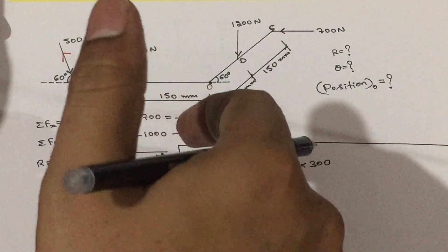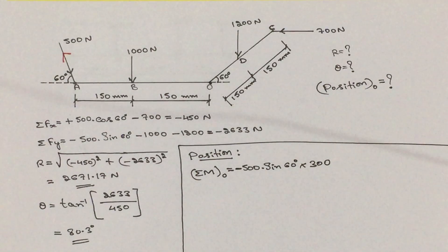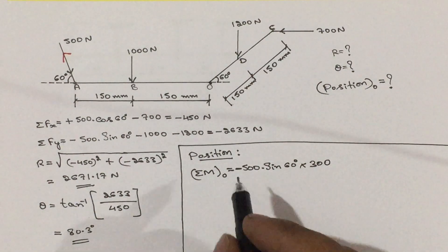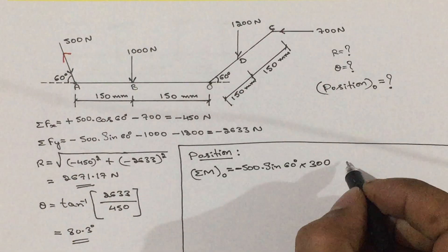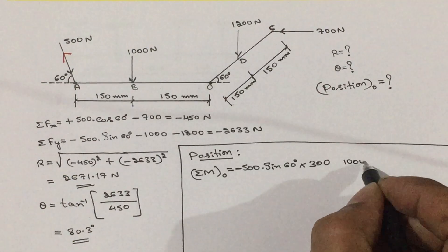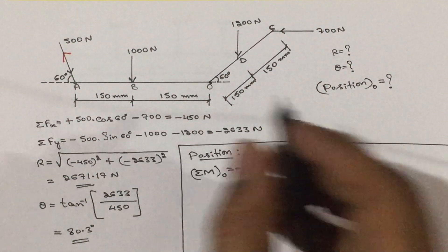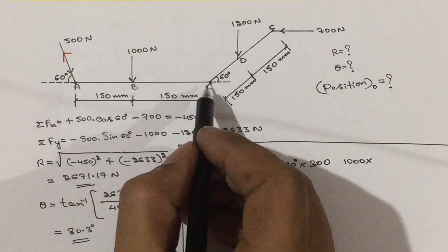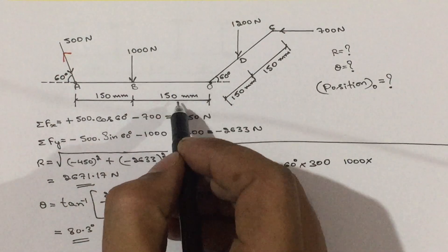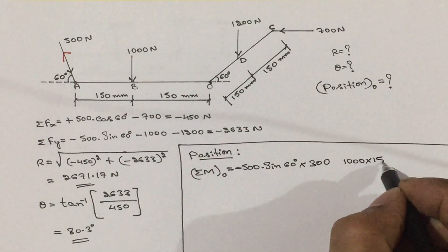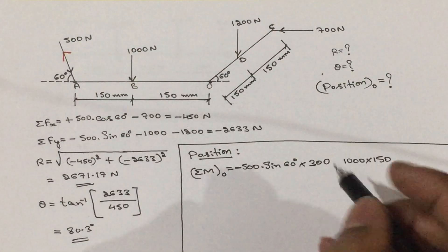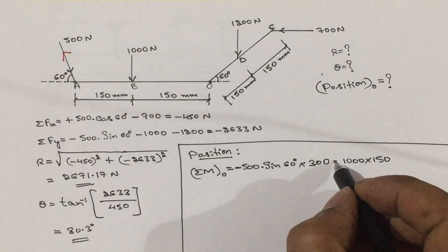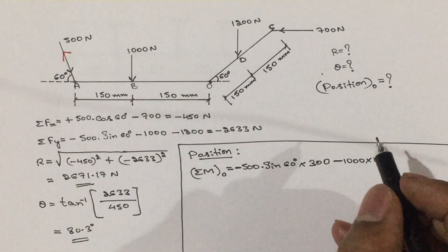The next force is 1000 Newton. The perpendicular distance between the 1000 Newton force and point O is 150 mm. It is rotating in the anticlockwise direction, so it becomes minus.